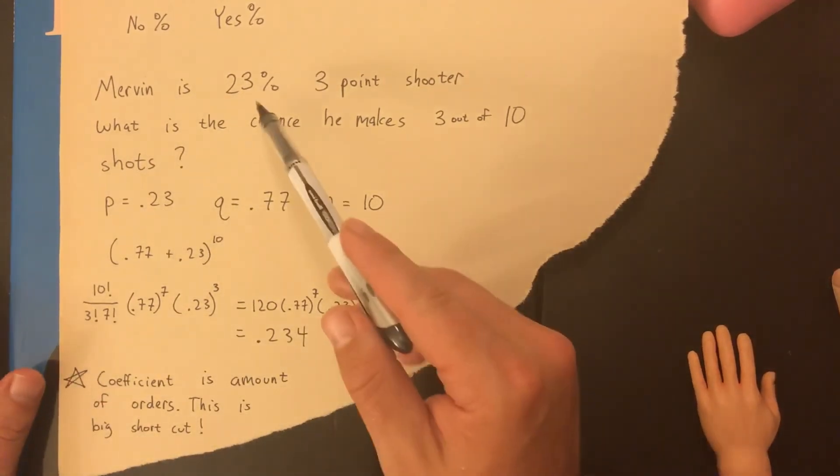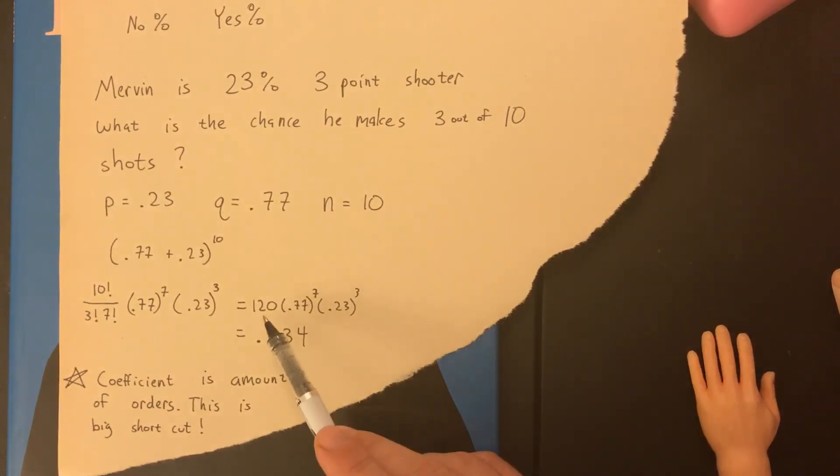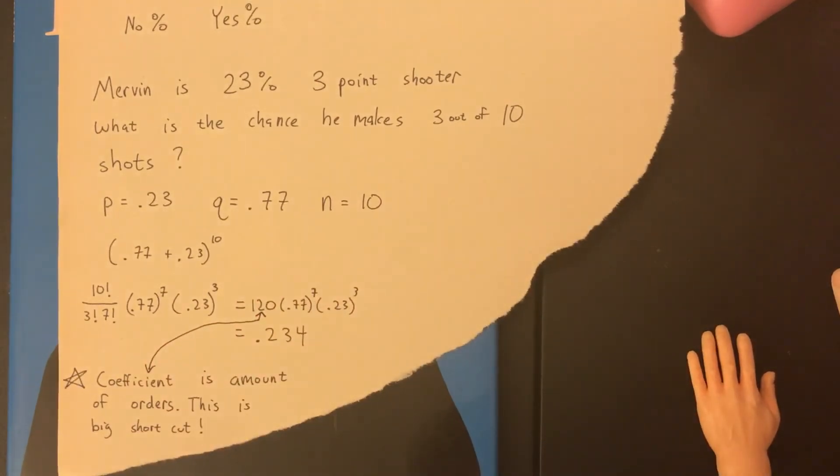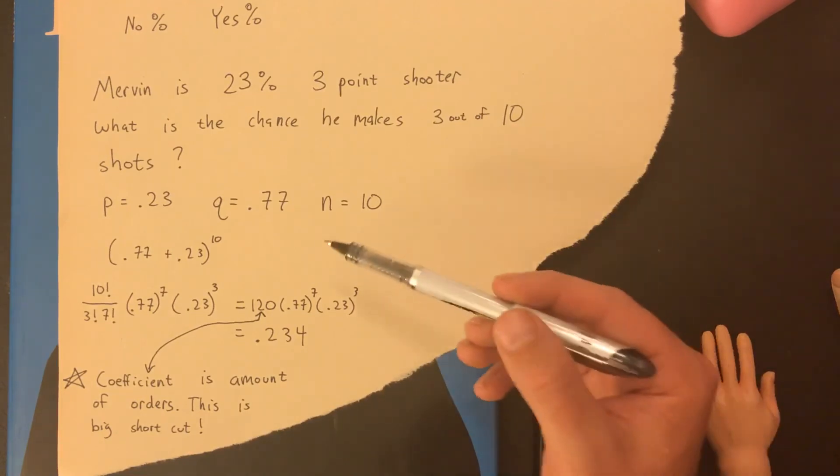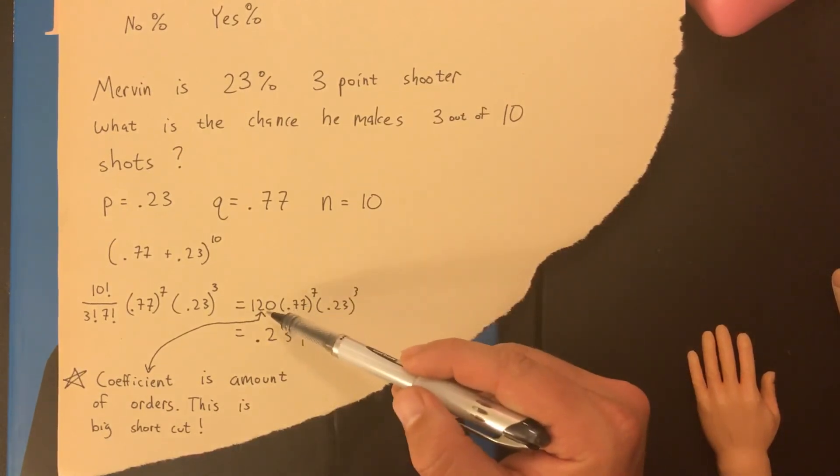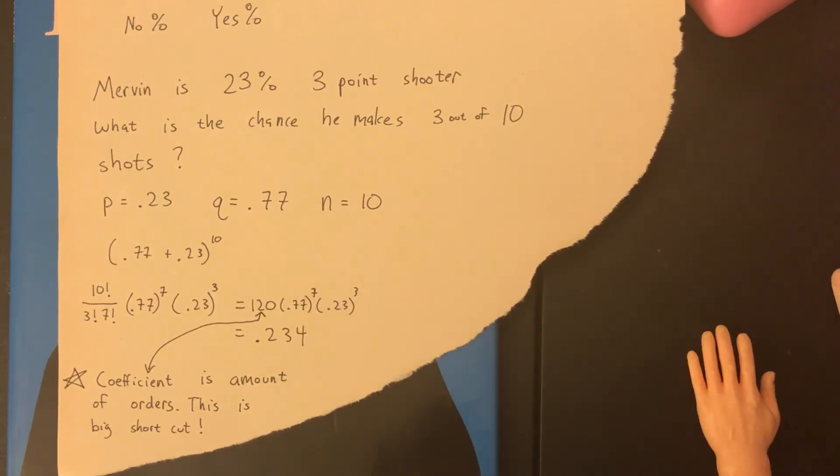Once again, think about, okay, 23% shoot, three pointer makes 3 out of 10. 23, it just seems like a reasonable answer. It doesn't seem too far off. What's the key to this process to making it make sense? It's this number here: 120. 120, the coefficient, this is the shortcut. Why? Because we said before there's a bunch of different orders this can happen in. How many orders? 120 different orders. Each order has the same chance of happening, but since we know there's 120 of them, that's what you multiply by. So that's kind of the key reason, the key concept underlying why this is a shortcut, that this coefficient is the amount of orders. Unless you just multiply it, and there's the big shortcut.